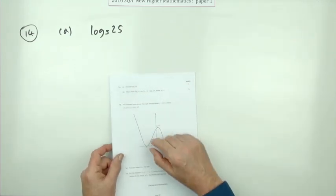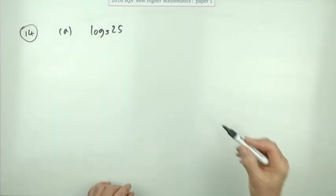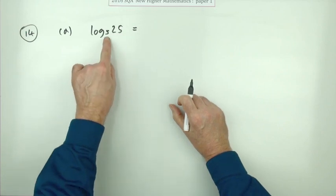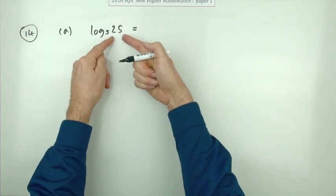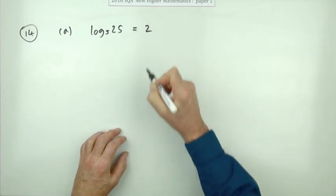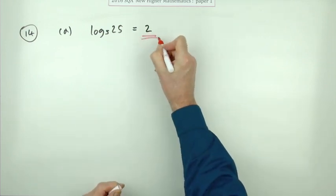The first part's only worth one mark, so you get the mark just for stating the answer. What does log₅ 25 mean? It means what power of 5 gives me this number, and the answer is 2, because 25 is 5 to the power 2.